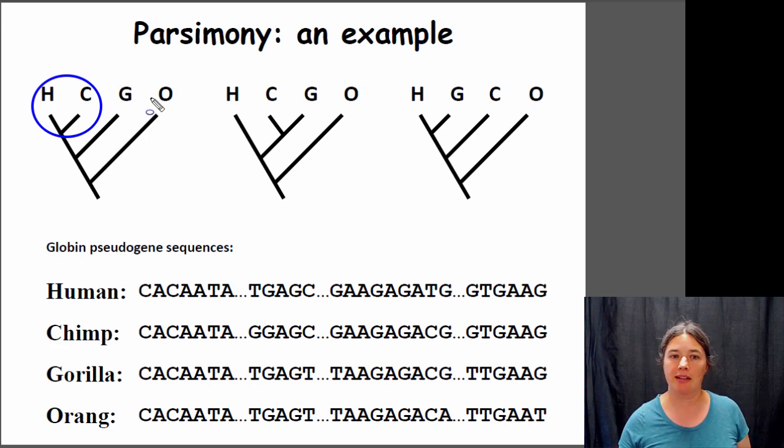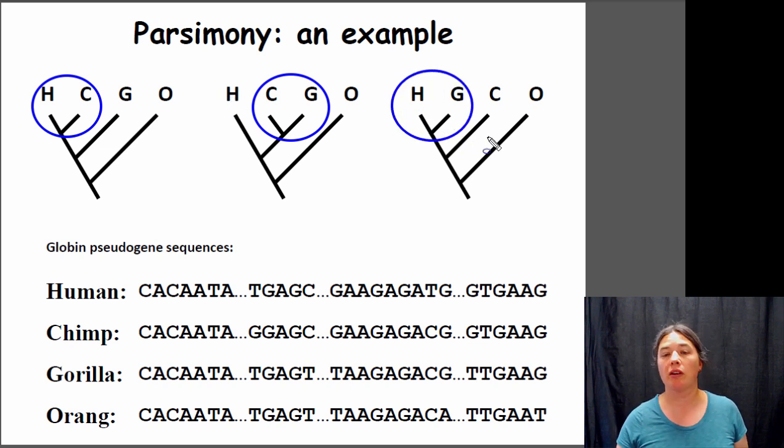That looks like this tree here: humans and chimpanzees are more closely related, they're more distantly related to gorillas, and then you have your outgroup with the orangutans. You can build a tree where chimpanzees and gorillas are more closely related to each other and then humans are more distantly related, or you can build a tree where humans and gorillas are more closely related to each other and chimpanzees are more distantly related.